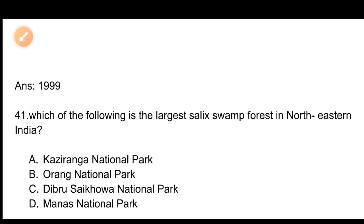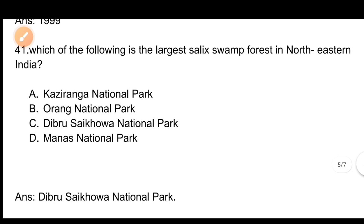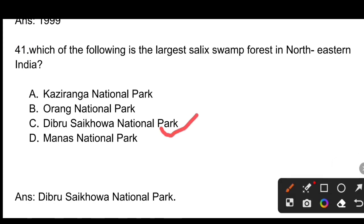Question number 41: Which of the following is the largest semi-swamp forest in northeastern India? Options: A) Kaziranga National Park, B) Orang National Park, C) Debru Saikowa National Park, D) Manas National Park. The correct answer is C, Debru Saikowa National Park, which is the largest semi-swamp forest in northeastern India.